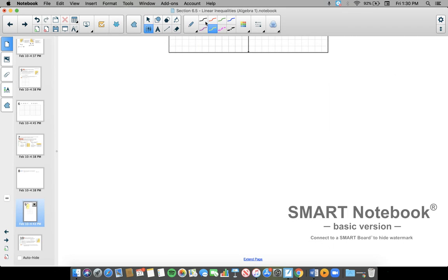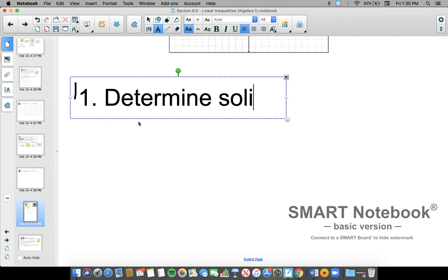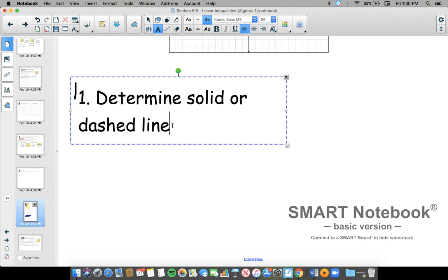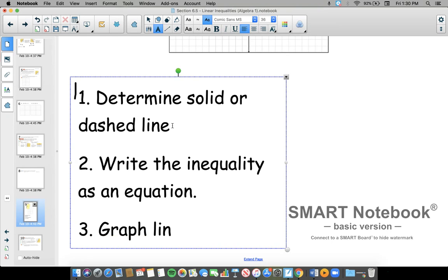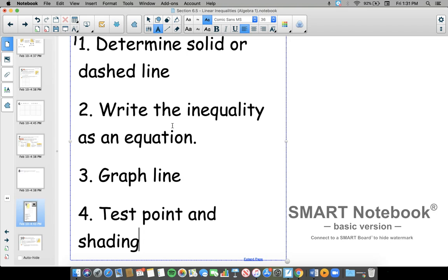Here's your set of rules. One, determine solid or dashed line. Two, write the inequality as an equation, or you can write down replace inequality symbol with equal sign. So that's what you're doing. You're taking out the inequality symbol. You're putting in an equal sign. Three, graph that line. And then finally four is a test point. You go through those steps. Determine solid or dashed line, write the inequality as an equation, graph that equation, then choose a test point and do your shading.